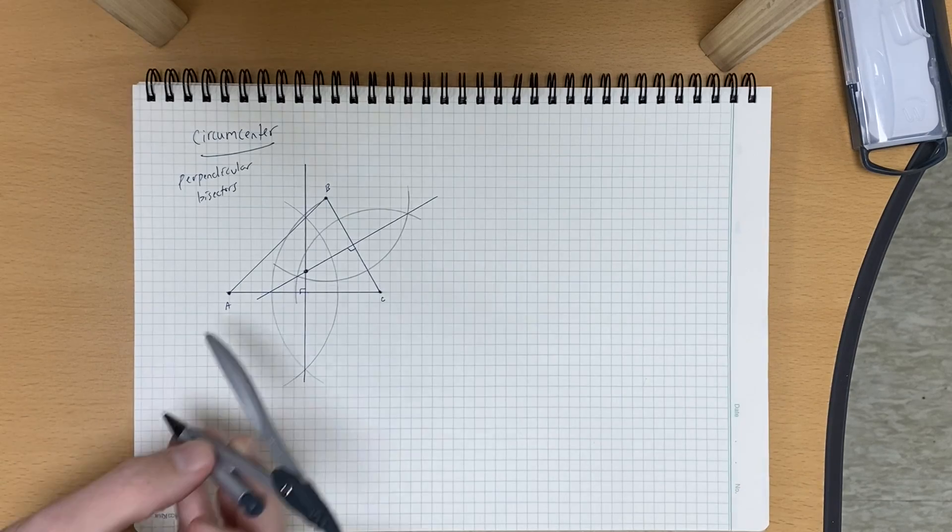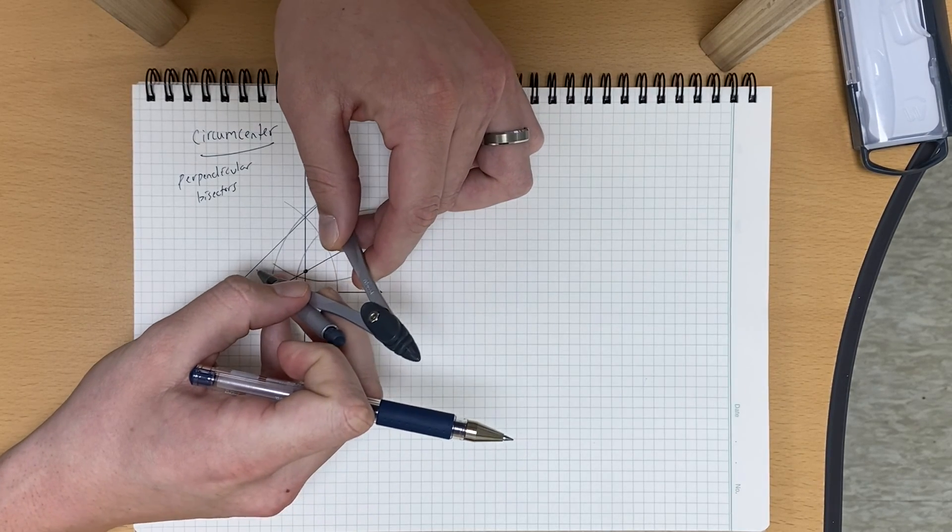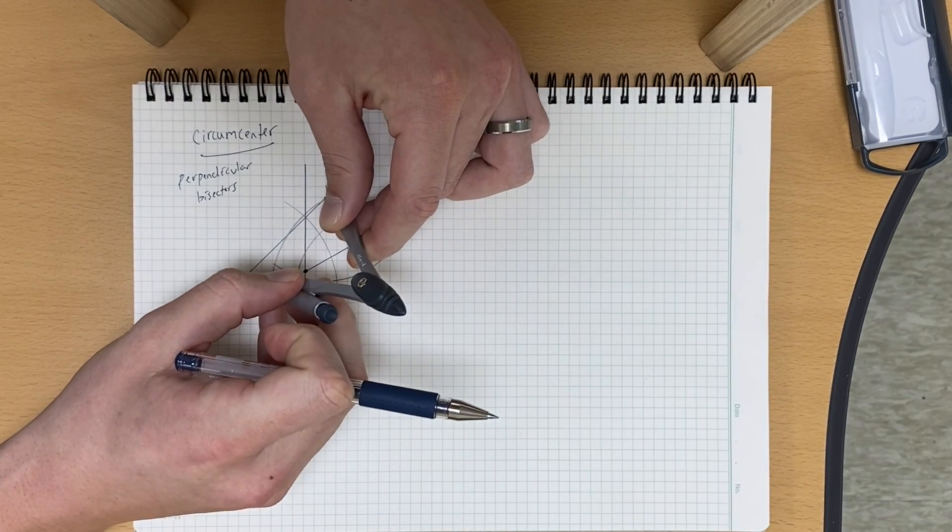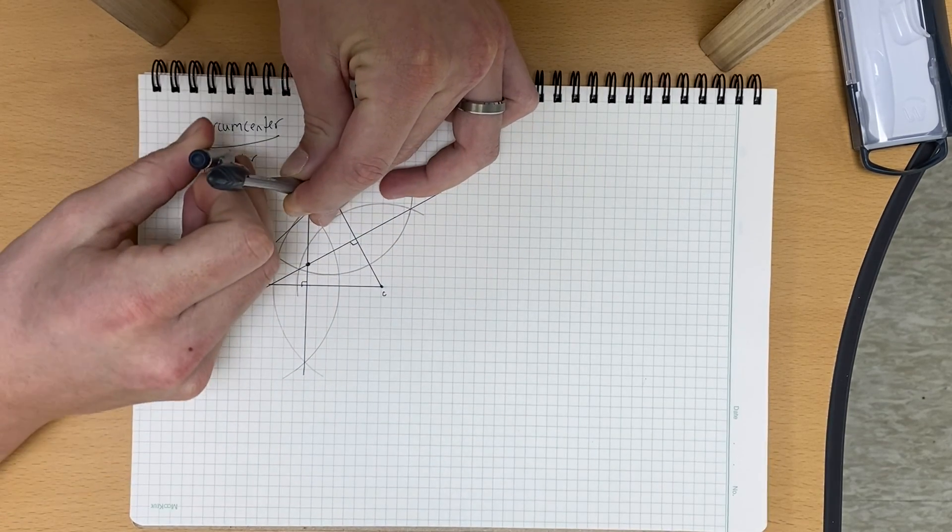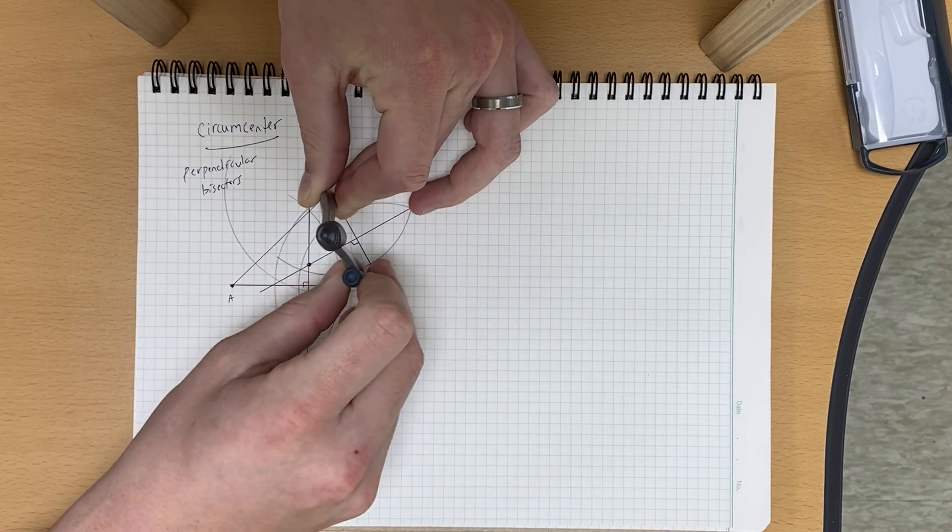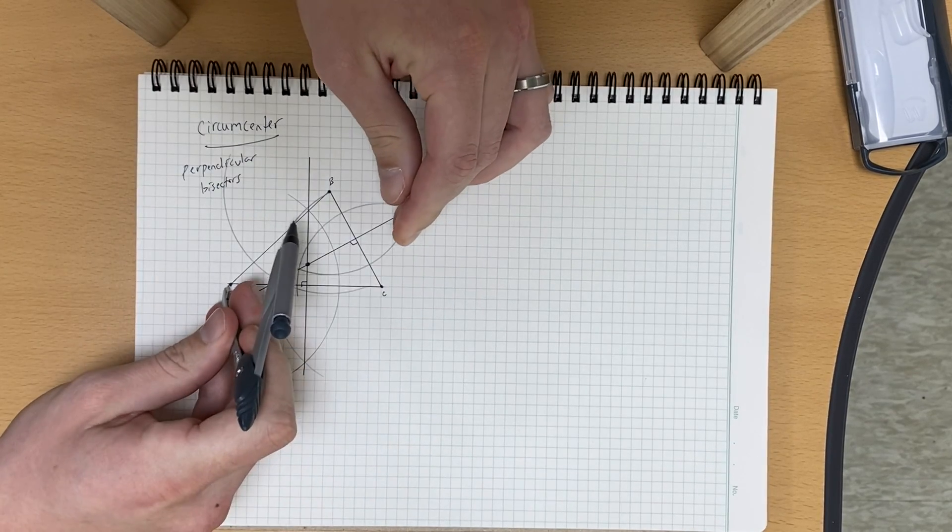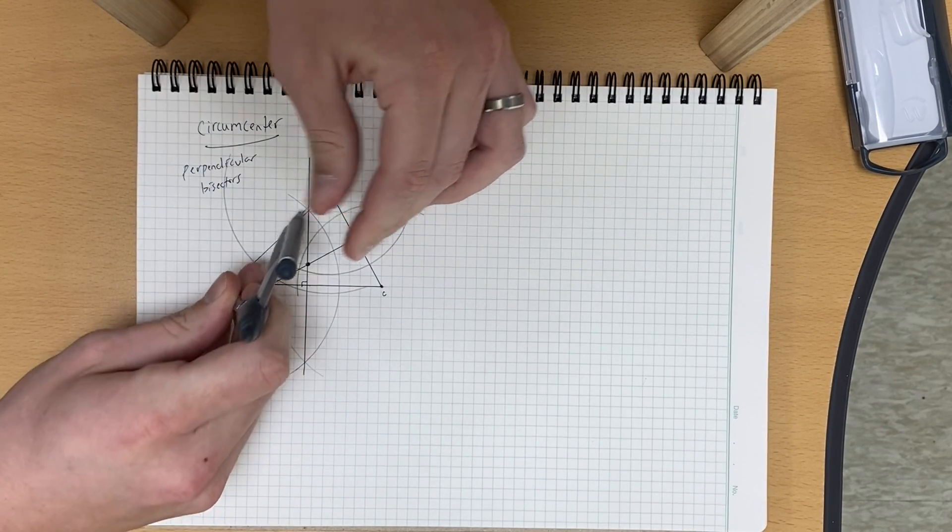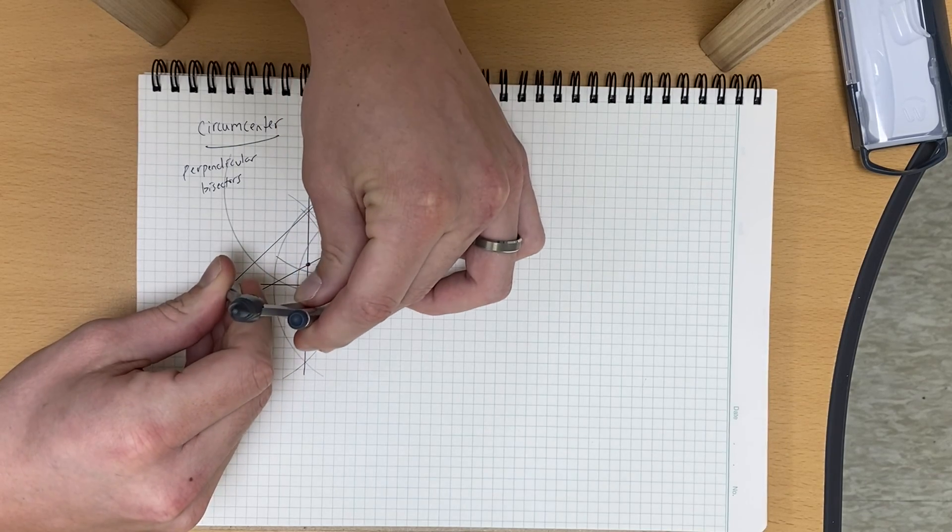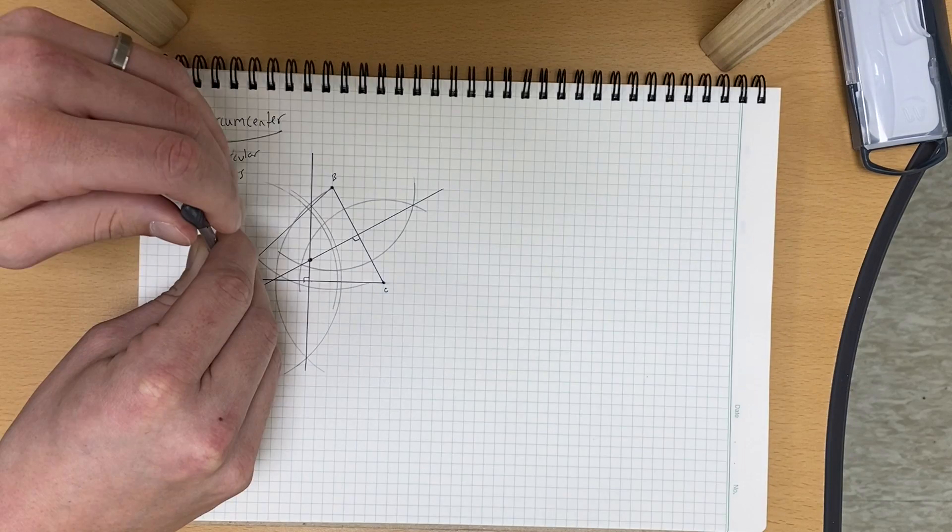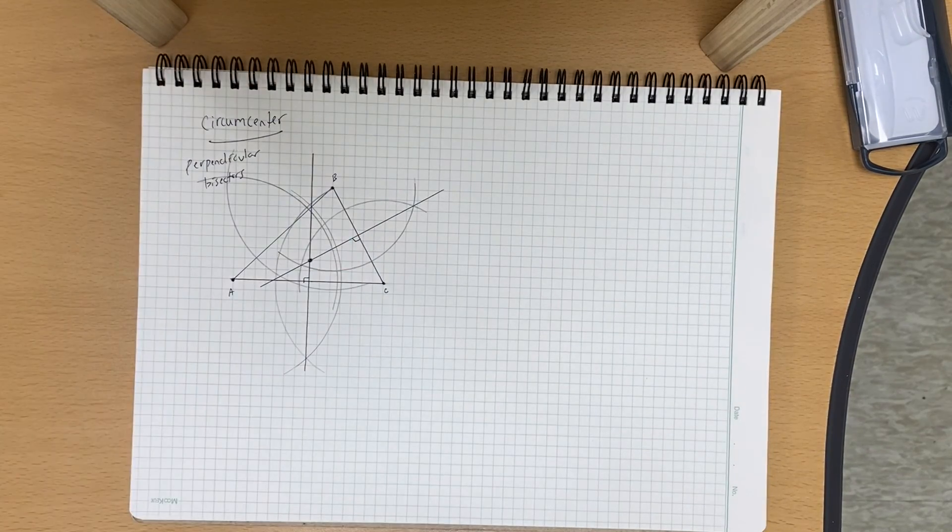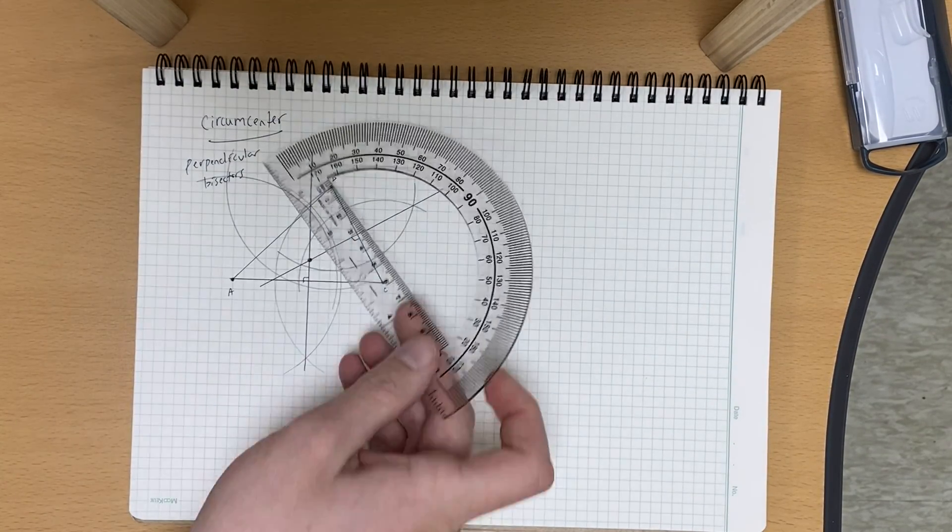So for AB, we can't, let's open it a little bit wider. Just make sure it's more than half, and we'll draw our arc running into my words there. Put the needle on A and draw our arc going this way. So we've got a lot of arcs here. So make sure you are keeping track of which arc goes with which.